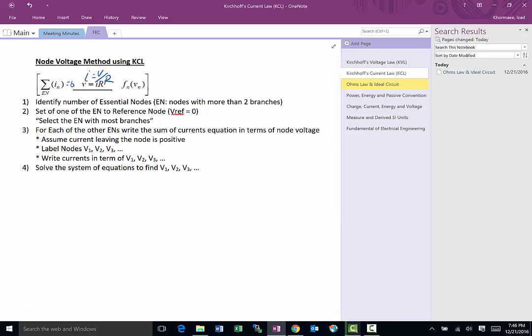As far as the steps to solve a problem using this method: first step, you got to identify all of the essential nodes - nodes with more than two branches coming to it. You set one of them to reference, assume it's zero. Then for each of the other essential nodes you write sum of equations for those nodes and set them equal to zero.